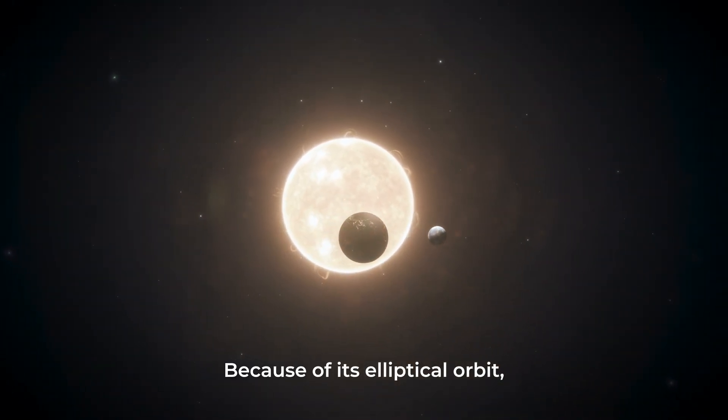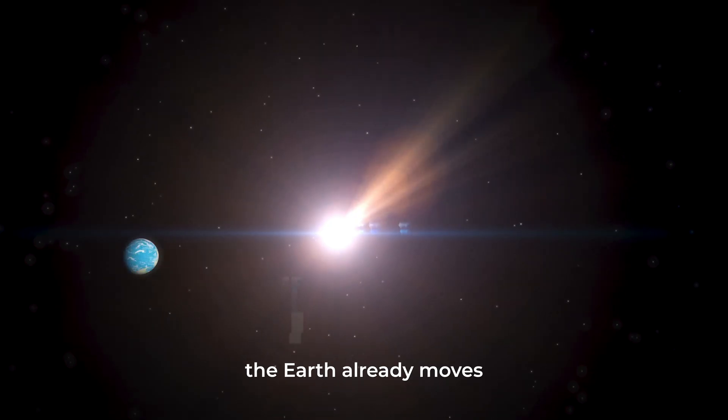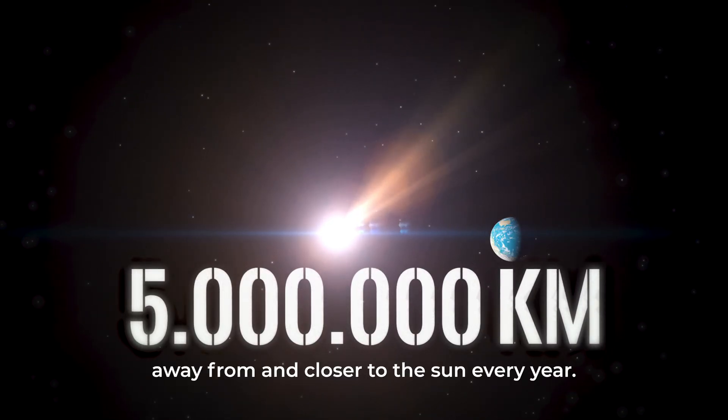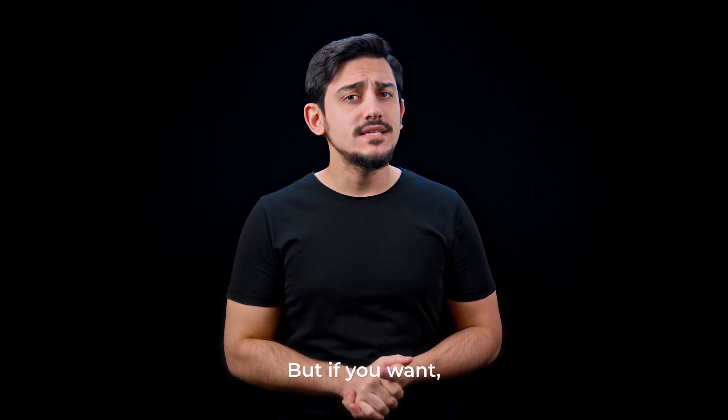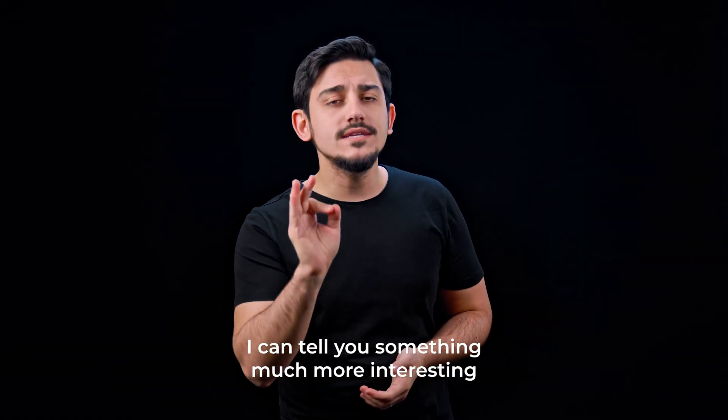Because of its elliptical orbit, the Earth already moves five million kilometers away from and closer to the Sun every year. So this popular rumor is not true. But if you want, I can tell you something much more interesting.